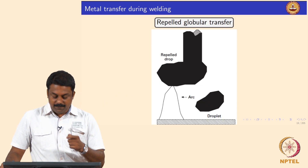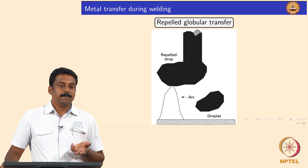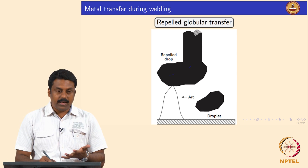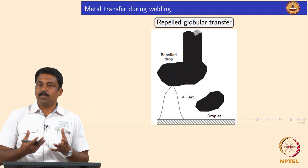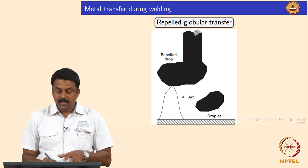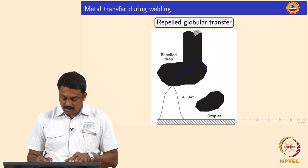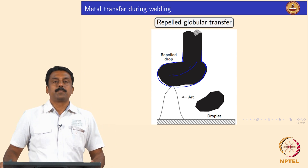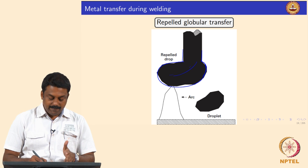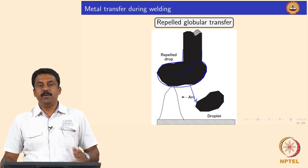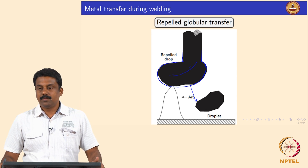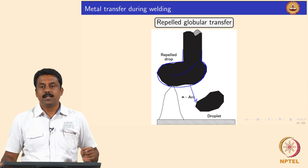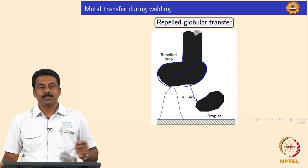If you increase the current slightly further it becomes rippled. In rippled globular mode, the globular shape changes to rippled globular because of increasing current — some Lorentz force is generated and that changes the magnetic field inside the droplet. It changes the shape of the droplet into the shape of a buffoon's shoe, and then after attaining critical mass, gravity pulls the droplet down. As you increase from globular to ripple transfer and increase current further, you see a change in transfer mode.